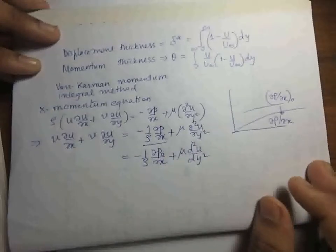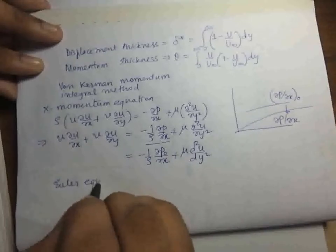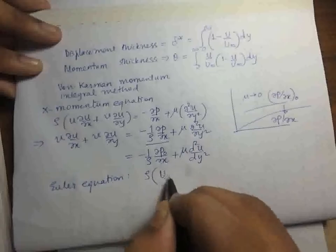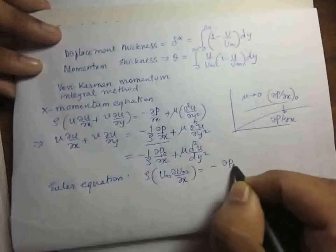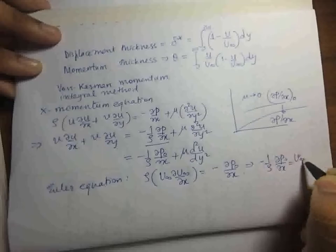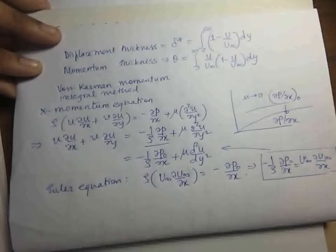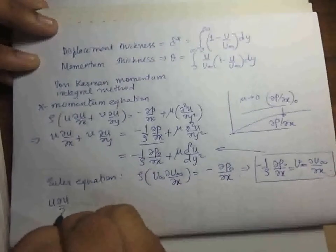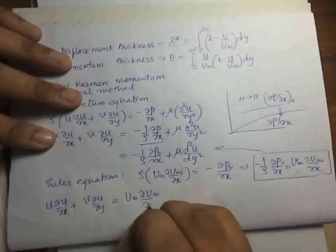Because u will be a function of y, external to the boundary layer we have the Euler equation, since outside the boundary layer there is no effect of viscosity. So outside the boundary layer: rho u_infinity (del u_infinity / del x) equals minus del p_outside / del x, which implies minus (1/rho)(del p_outside / del x) equals u_infinity (del u_infinity / del x). Using this result, we obtain u (del u / del x) plus v (del u / del y) equal to u_infinity (del u_infinity / del x) plus the viscous term.